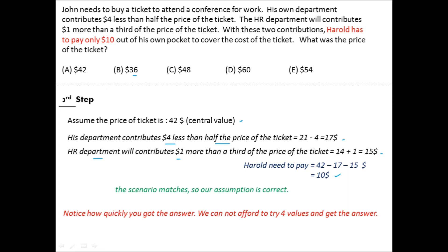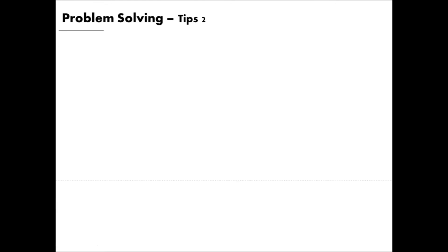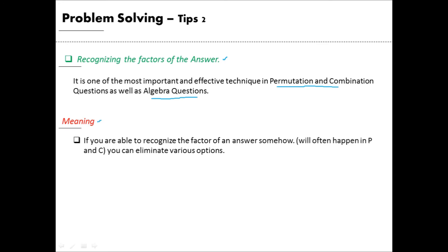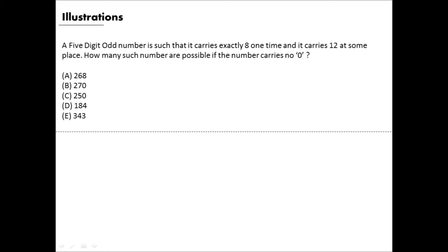Tip 2: Recognizing the factors of answers. This is one of the most important techniques for difficult topics like Permutation & Combinations and algebra. If you can recognize a factor that the answer must have, you can eliminate several options immediately. For example: a five-digit odd number that contains exactly one 8, one 2, no zeros — how many such numbers are possible? Here are five answer options.